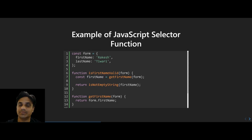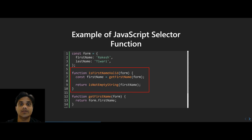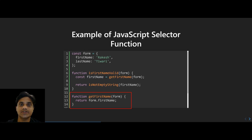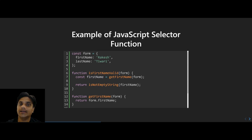In this example, imagine you are receiving a form object from the UI DOM element. You want to validate if the first name is valid or not. To achieve this, we will create some read-only functions. For example, I will create a function called 'is first name valid'. In this function I will pass the form object coming from the UI element. I will also create a secondary function called 'get first name', which simply returns the first name from the form object. This is the building block of the selector — a very small function that reads a single property and returns its value.